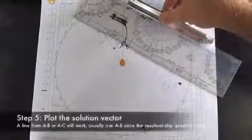These two points represent two possible solutions to the problem. Almost always you use point Bravo because it results in a lower ship speed. So now what you do is measure from alpha to Bravo, or alpha to Charlie if you want to use that one. But today we'll use alpha to Bravo.